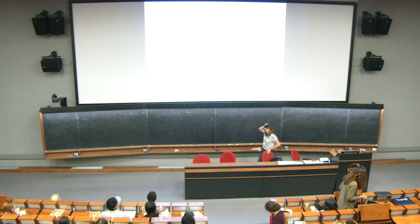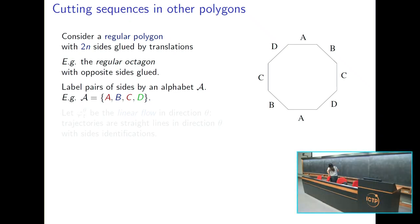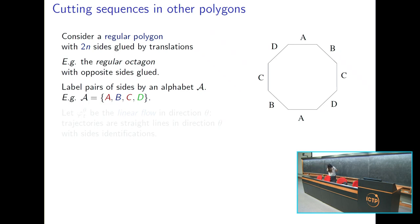I'm going to tell you something we did with John Smillie a few years ago, and there's a follow-up which is also joint work with Irene Pasquinelli, who is here, and another postdoc, Diana Davis. It all started because when I was an undergraduate student I read a little paper by Caroline Series, which I tried to explain in detail to you. When I read it as an undergrad, I was like — wow, this is beautiful. It's this picture of renormalization; I really fell in love with it. At some point we were discussing with John Smillie and we were looking at the octagon.